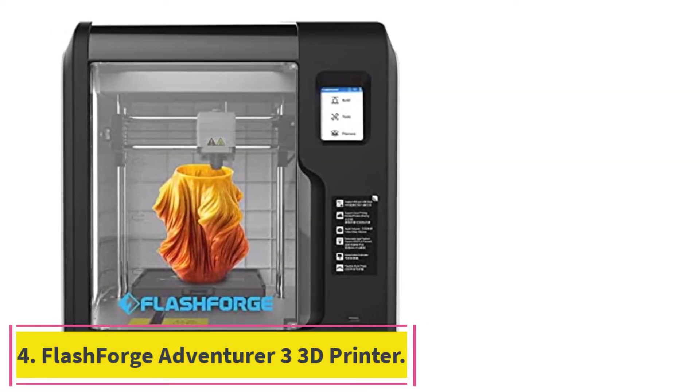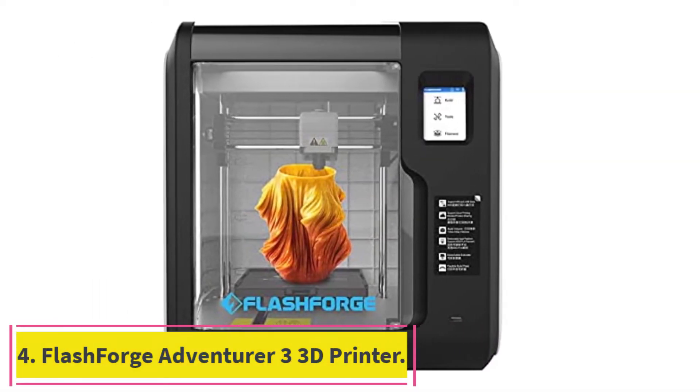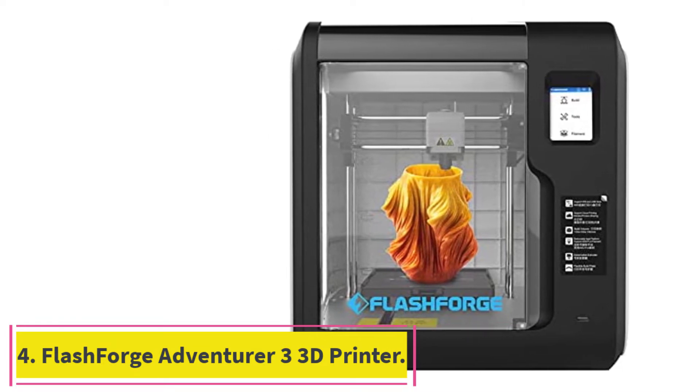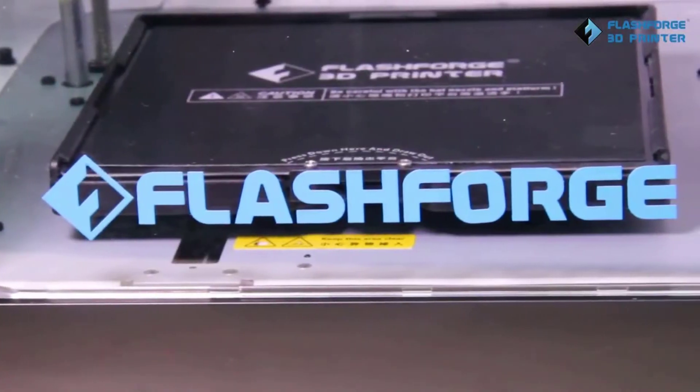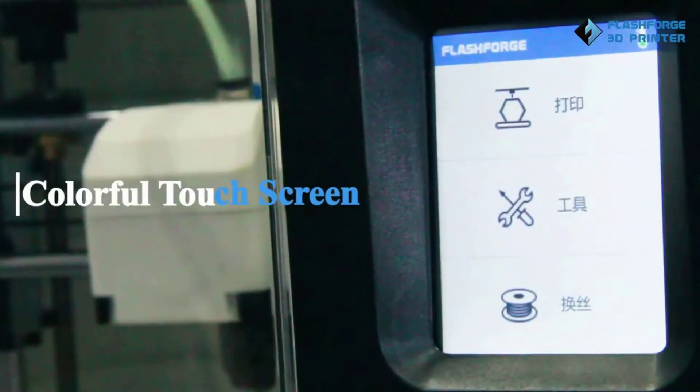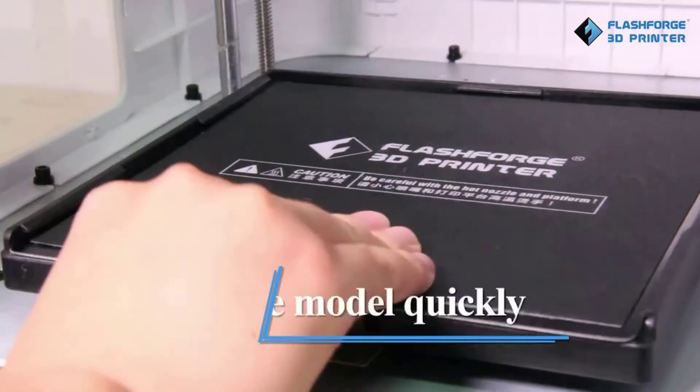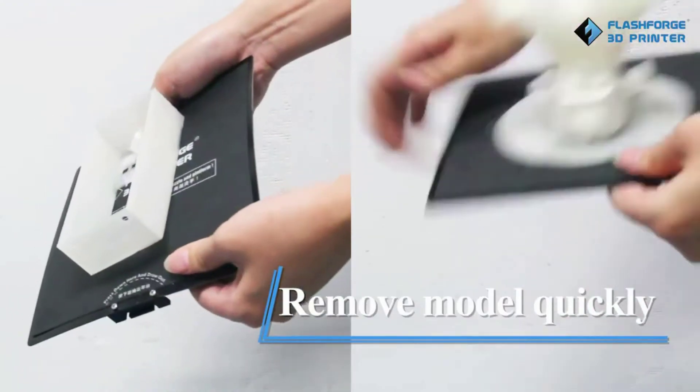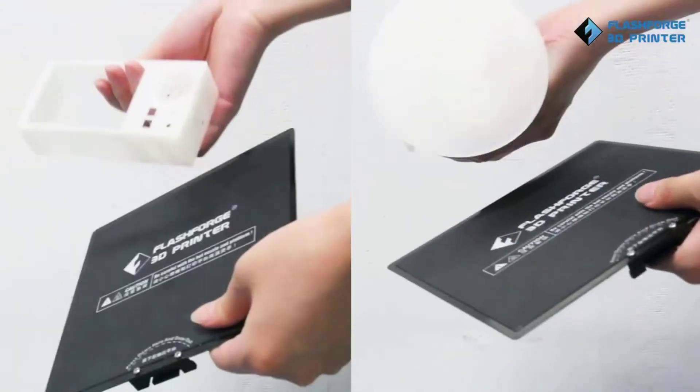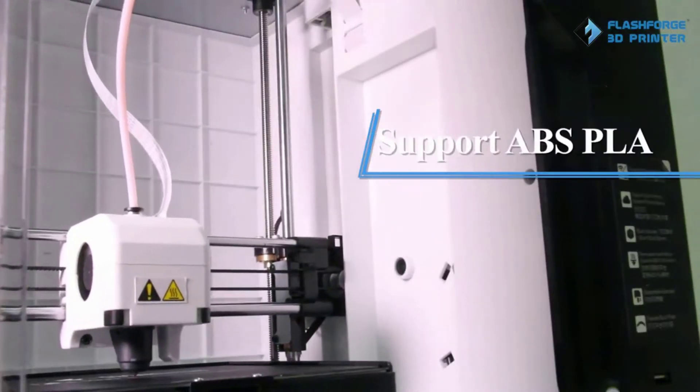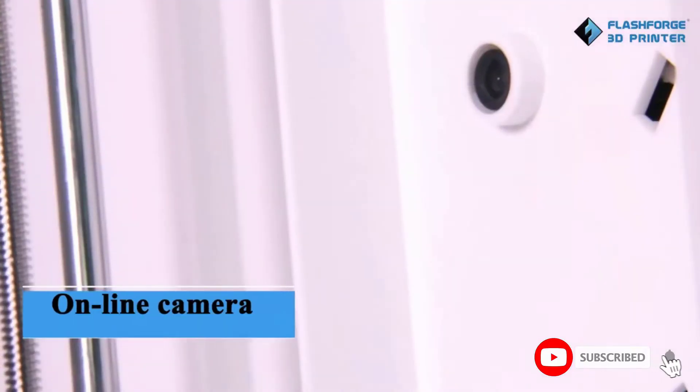Number 4, Flashforge Adventurer 3 3D Printer. The Flashforge Adventurer 3 is a 3D filament printer that is excellent for all types of architectural and industrial tool designs and models. It is easy to use and takes just a few minutes to set up. This printer's bed is removable so you can easily take out projects when they're done. It also features an automatic bed leveler.